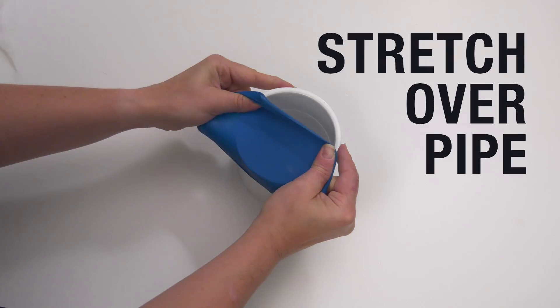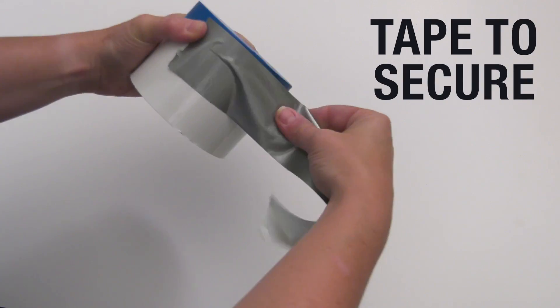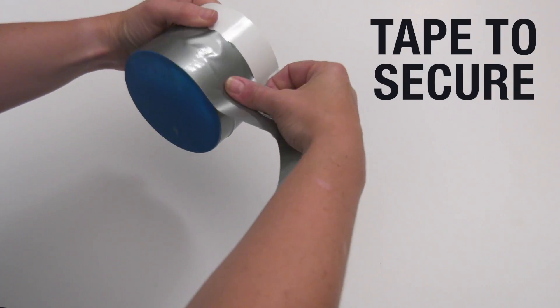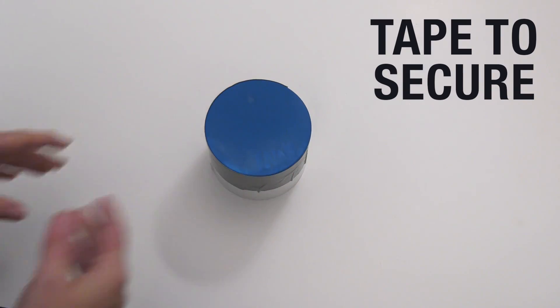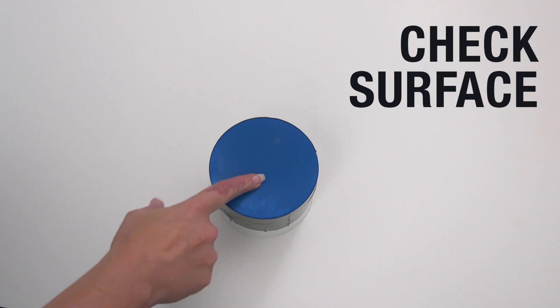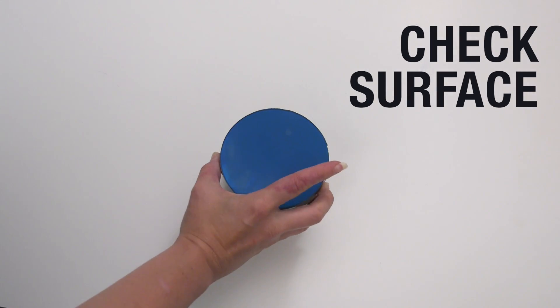Now, stretch the balloon over one end of the pipe, making something that looks like a drum, and use duct tape to secure it. Make sure the balloon is stretched as tight as possible. If you tap the surface, it should vibrate.